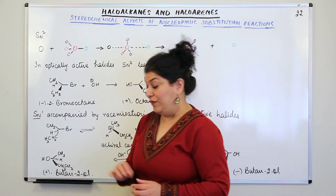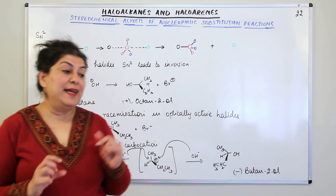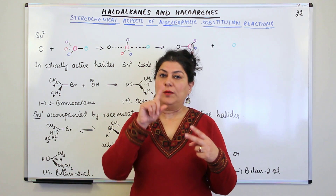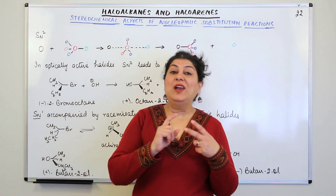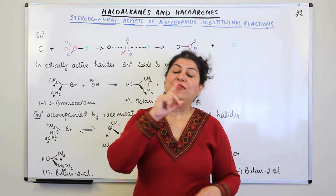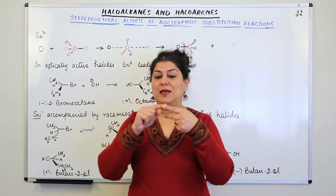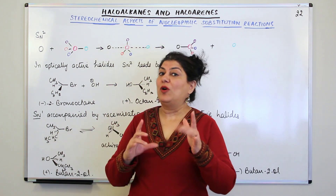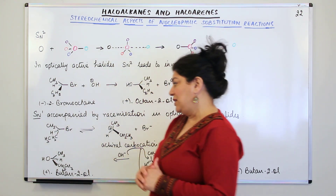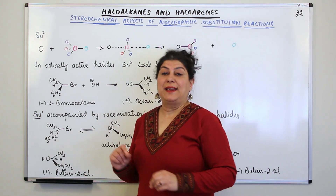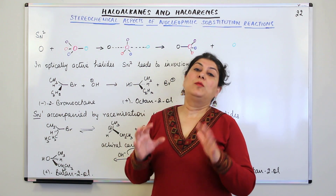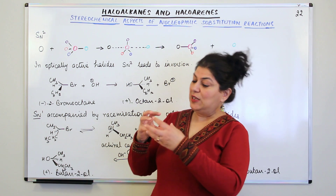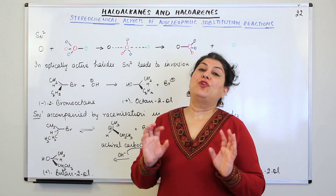Now, what about SN1? When SN1 substitution takes place, it is called SN1 because in each step only one reactant is undergoing change — one reactant is rate-determining. It actually occurs in two steps. In the first step, a carbocation is formed — that is, the haloalkane first loses the halogen, resulting in the formation of a carbocation.